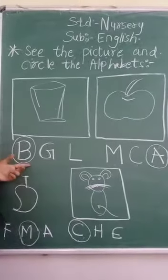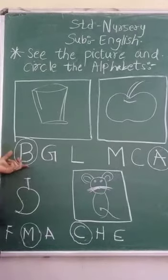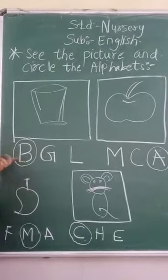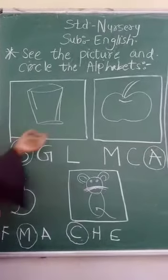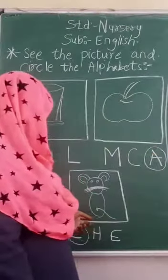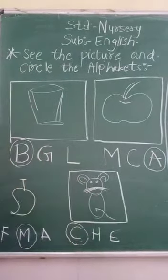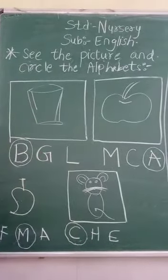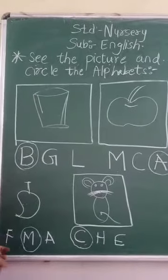Whatever comes from B, circle B. Whichever letter a word starts with, circle that alphabet. B for Bucket, A for Apple, C for Cat. Write it here — four line points, go four times.